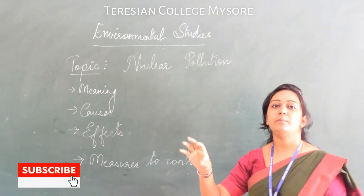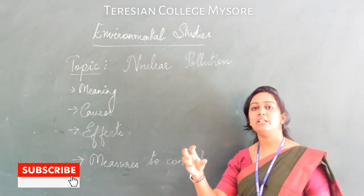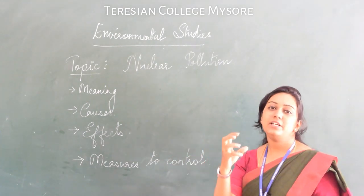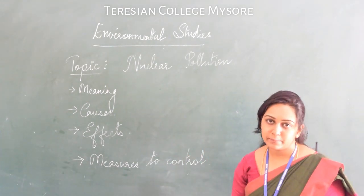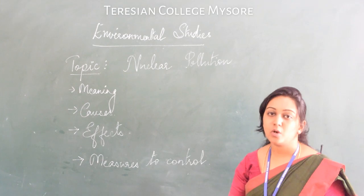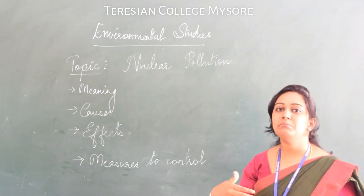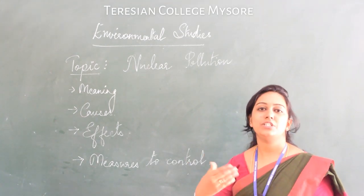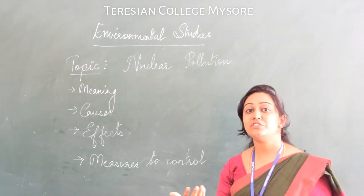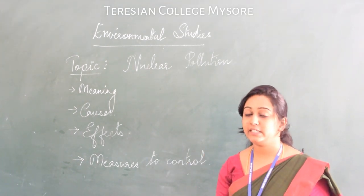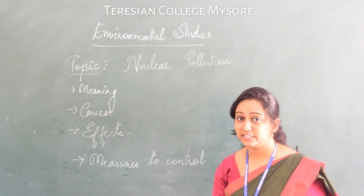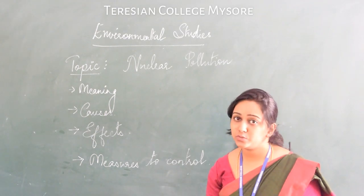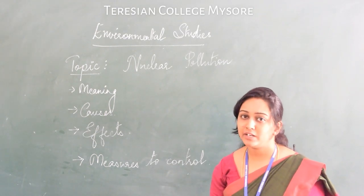To be very precise, nuclear pollution is a very harmful type of radiation which cannot be stopped immediately or given treatment immediately when it is causing damage to humans as well as to other forms of life.